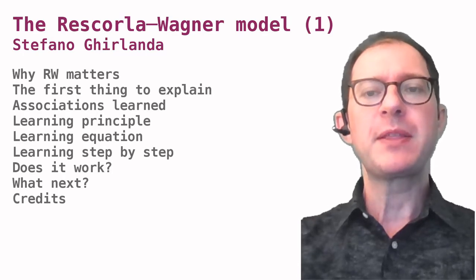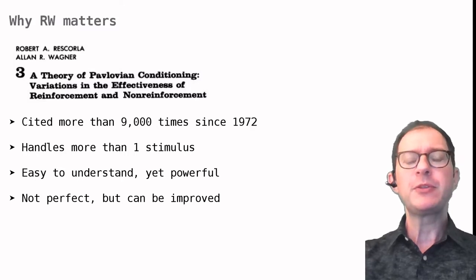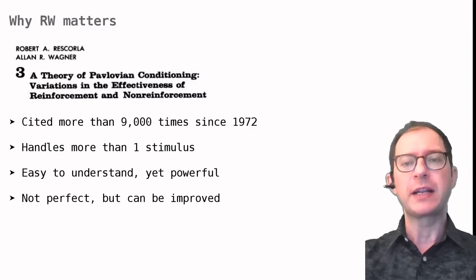Before explaining the model let's see why it matters. RW was published in 1972 by experimental psychologists Robert A. Rescorla and Alan R. Wagner.